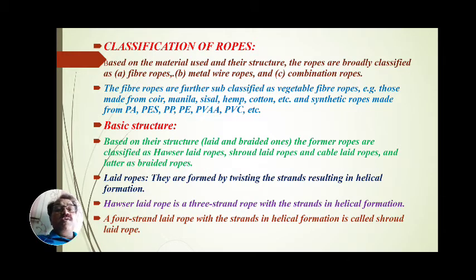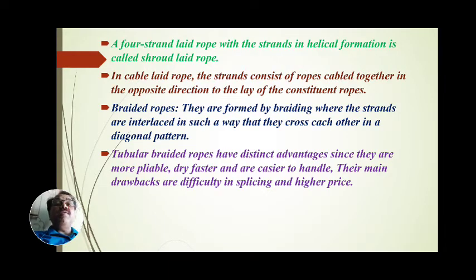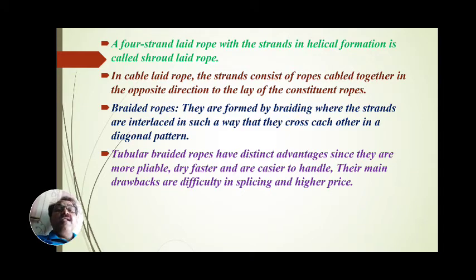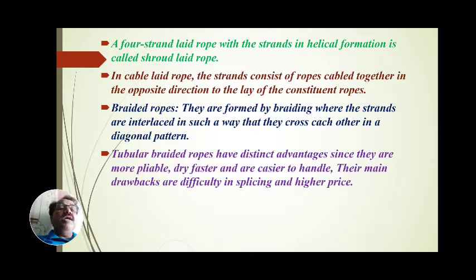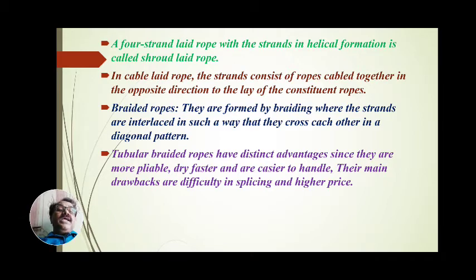So the basic structures are: hawser-laid ropes, shroud-laid ropes (four-stranded), and cable-laid ropes. In a cable-laid rope, the strands consist of ropes cabled together in the opposite direction to the lay of the constituent ropes. That is what distinguishes cable-laid ropes from the other types.